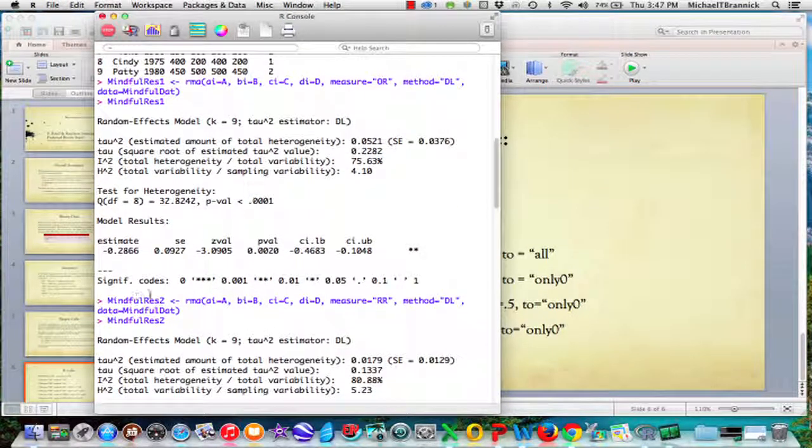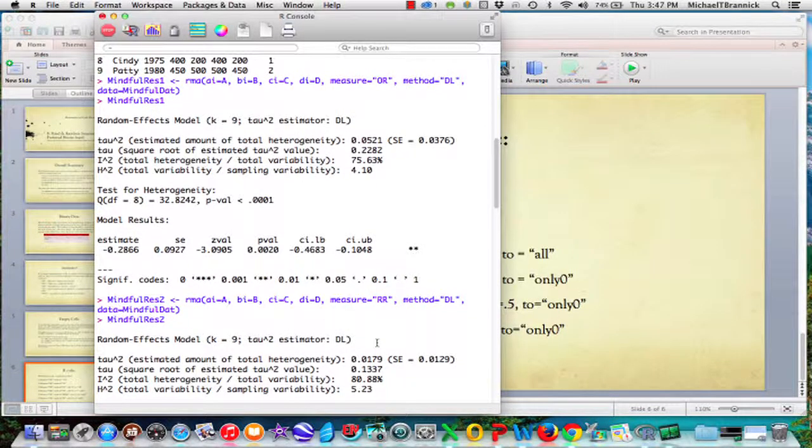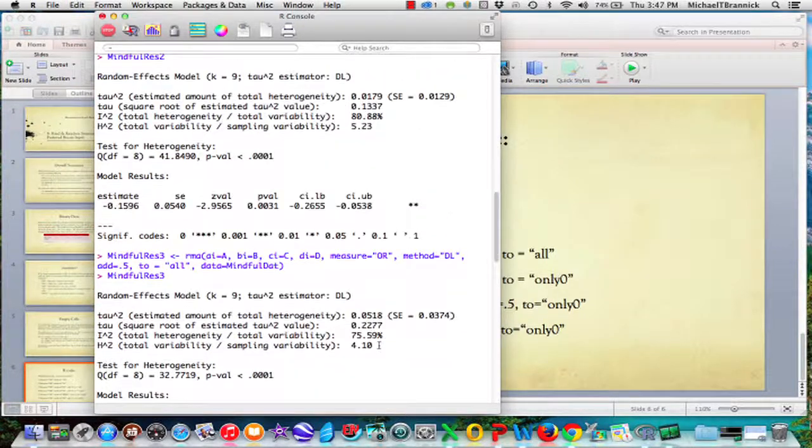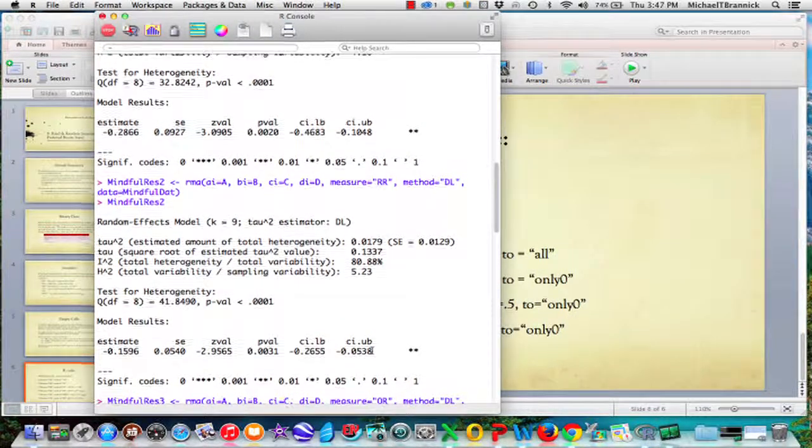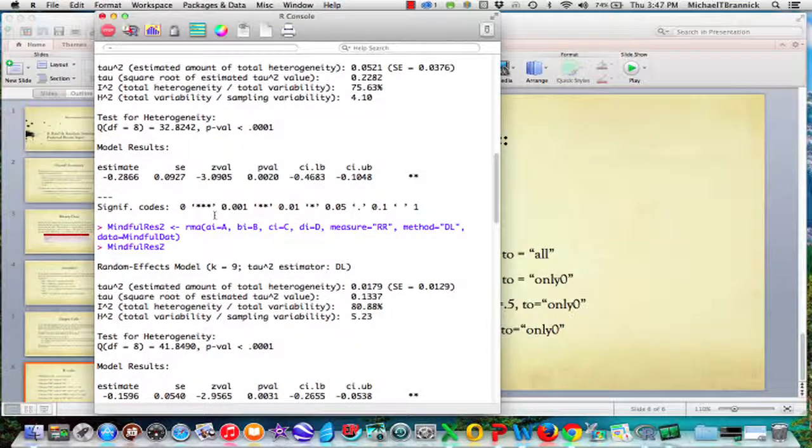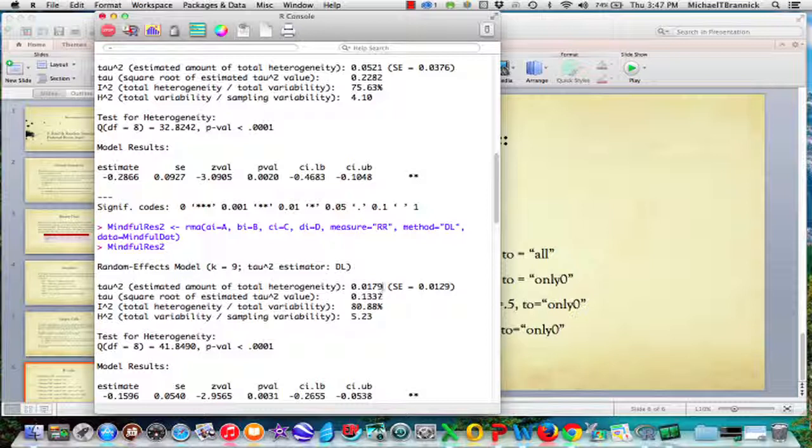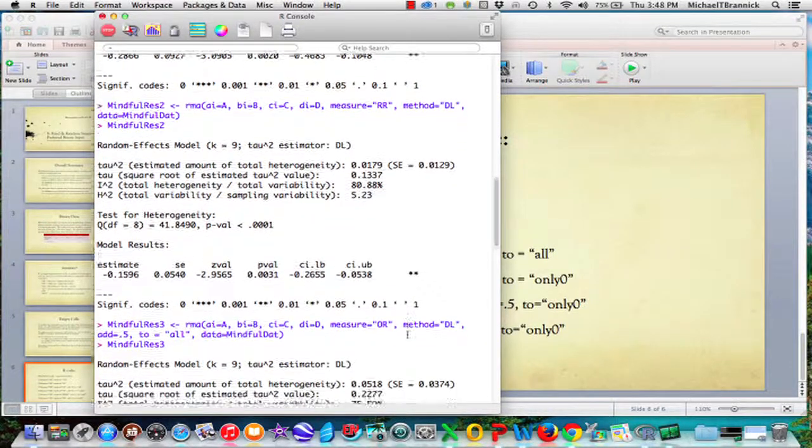Now I've done the same thing. Results two gets Metaphor when I'm reading in the same data, and now I'm asking for risk ratio instead of odds ratio. Everything else is the same. Metaphor gladly goes through and computes the risk ratio for me. Now it says tau is .13 instead of .23. We've got an I squared of 81 versus 76. We have an estimate of -.16 rather than -.29, and it goes from -.27 to -.05, negative on both sides. We still get a negative value, but notice that this is the log of the risk ratio rather than the log of the odds ratio.